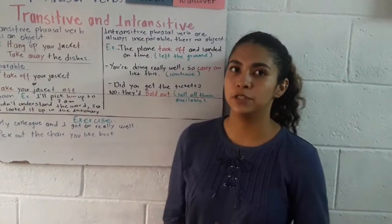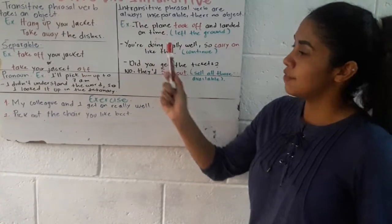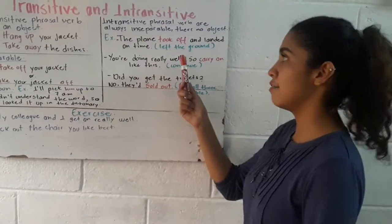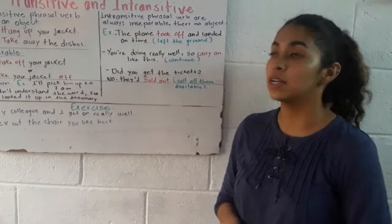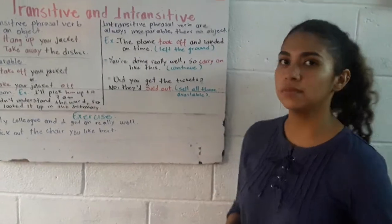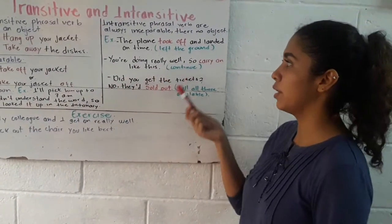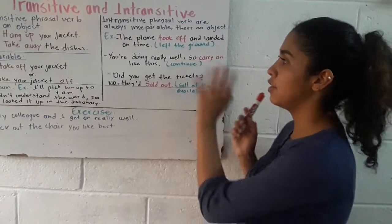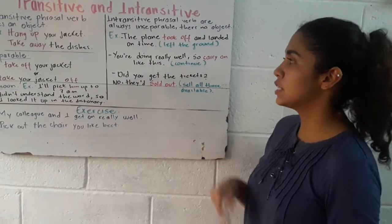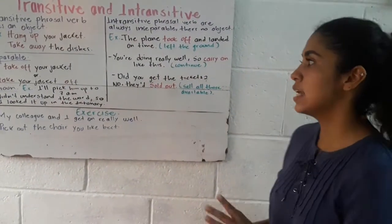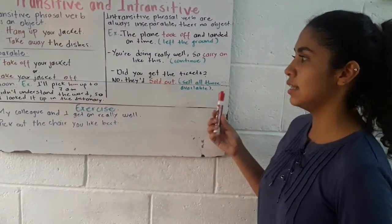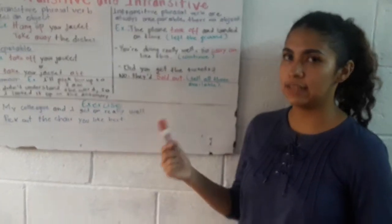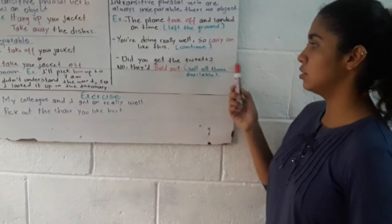Here we have some examples. The first is 'The plane took off and landed on time.' Took off is the intransitive phrasal verb, which means left the ground. Another example is 'You are doing really well, so carry on like this.' Carry on means continue. And the last example: 'Did you get the ticket? No, they sold out.' Sold out is the intransitive phrasal verb, which means sell all that is available.